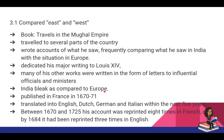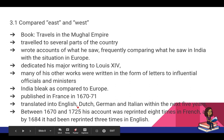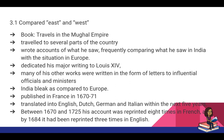Many of Bernier's works were written as letters to influential officers and ministers in France, comparing India to Europe and arguing that India was in a state of constant decline — that Europe must learn what not to do from the Indians. His Travels in the Mughal Empire was published in France in 1670–71, and was later translated into Dutch, German, and Italian. Between 1670 and 1725, his account was reprinted eight times in French and three times in English by 1684, showing how seminal his work was considered in western Europe.